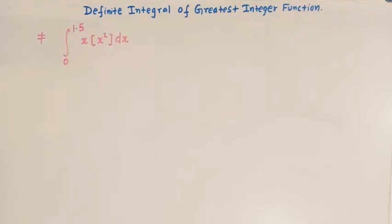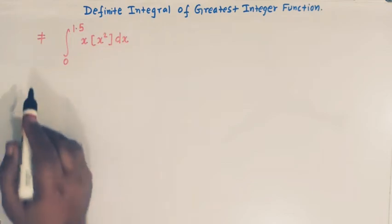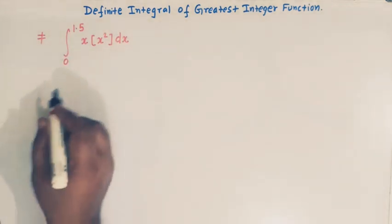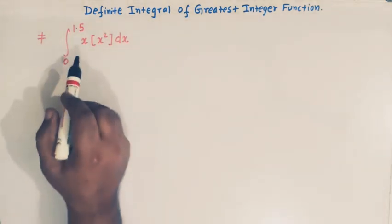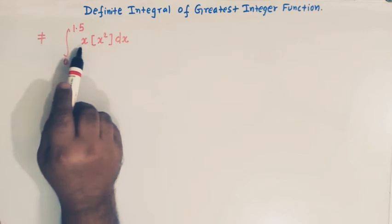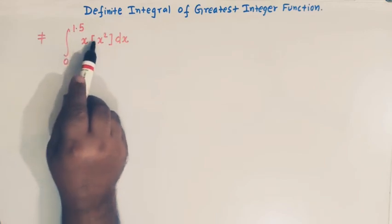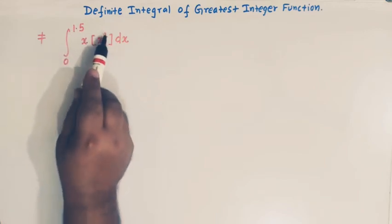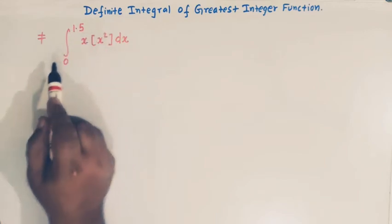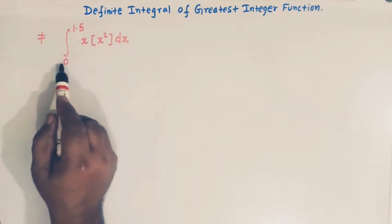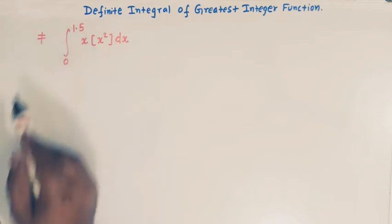Hello viewers. In today's lecture, we are going to solve one important definite integral involving the greatest integer function. So let us take this problem. Here we have to integrate the function x times greatest integer of x squared, from 0 to 1.5.